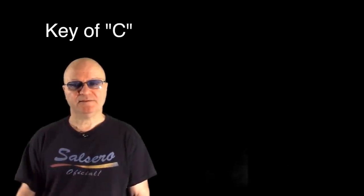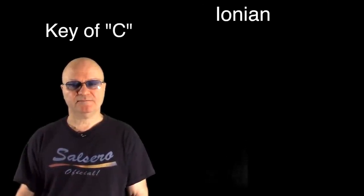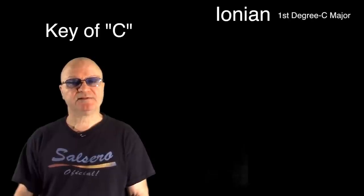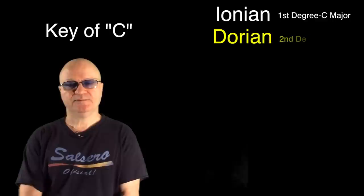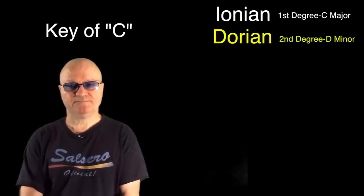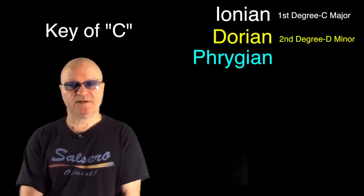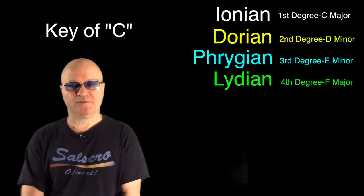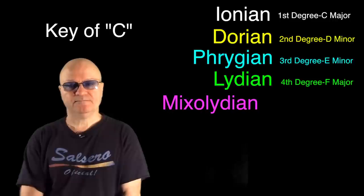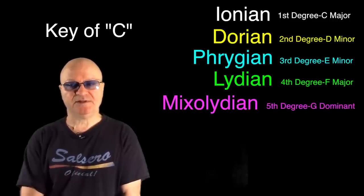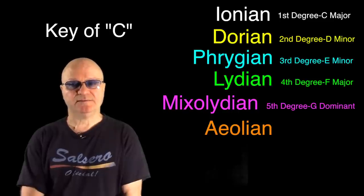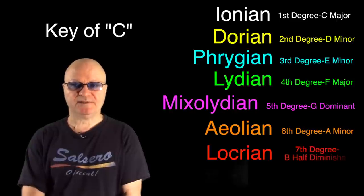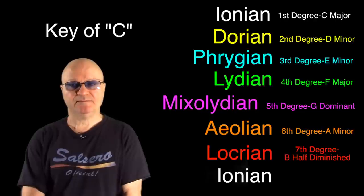In the key of C, the modes are: Ionian, starting on the first degree — in this case C major. Dorian, starting on the second degree, D minor. Phrygian, starting on the third degree, E minor. Lydian, starting on the fourth degree, F major. Mixolydian, starting on the fifth degree, G dominant. Aeolian, starting on the sixth degree, A minor. Locrian, starting on the seventh degree, B half diminished. And back to Ionian, the first degree, C major.